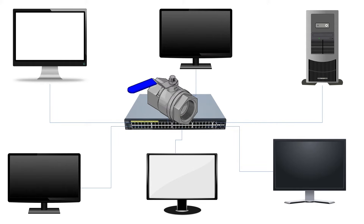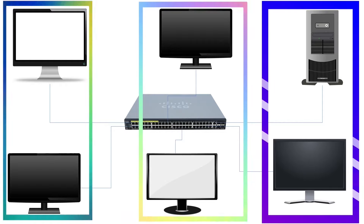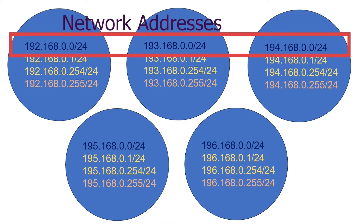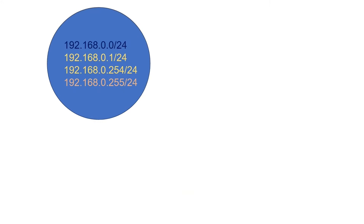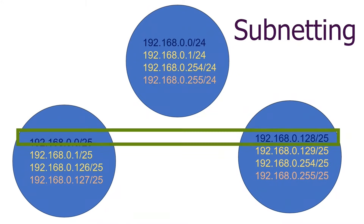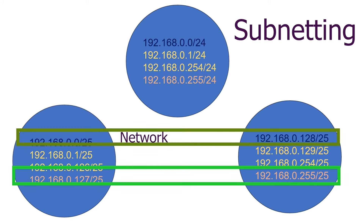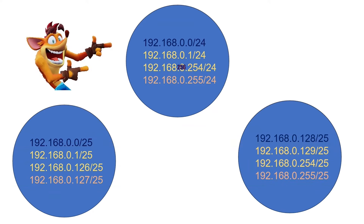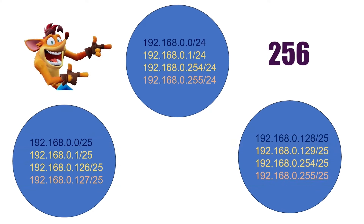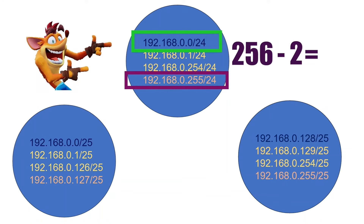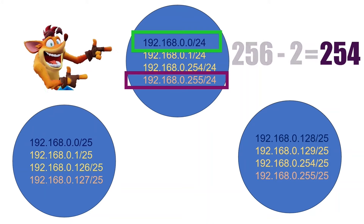To limit broadcast messages, we can break the network into smaller subnets. A subnet is a group of IP addresses having its own network and broadcast addresses. The process of breaking a subnet into smaller subnets is called subnetting. Since each subnet uses a separate network and broadcast address, subnetting reduces usable IP addresses. For example, a default class C network contains 256 IP addresses. After excluding the network and broadcast addresses, it has 254 usable IP addresses.